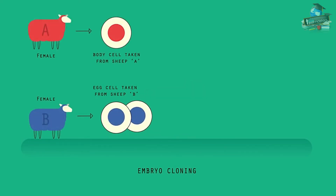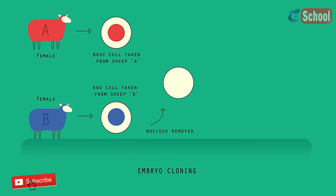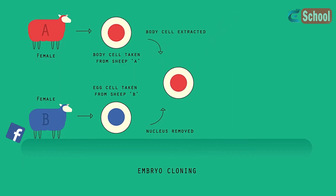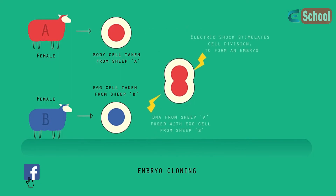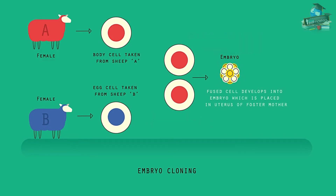An unfertilized egg cell is taken from an adult female and the nucleus is removed. A body cell, such as a skin cell, is taken from a different adult. The nucleus is removed from this adult body cell and is inserted into the egg cell. An electric shock then stimulates the egg cell to divide to form an embryo. These embryo cells contain the same genetic information as the adult body cell.